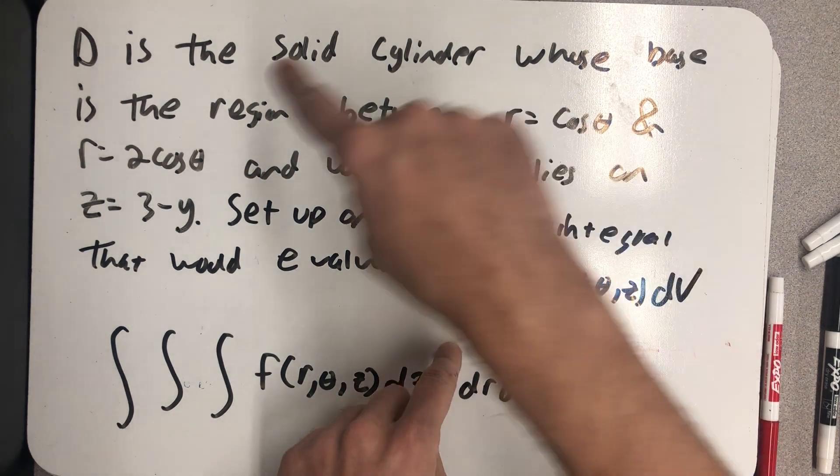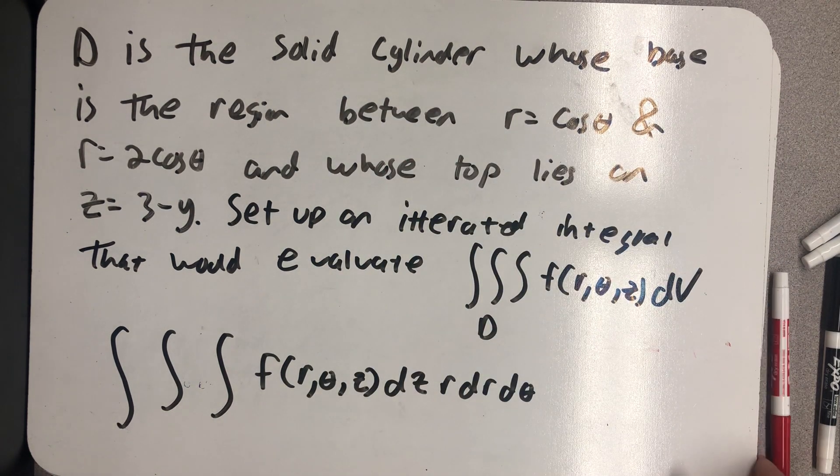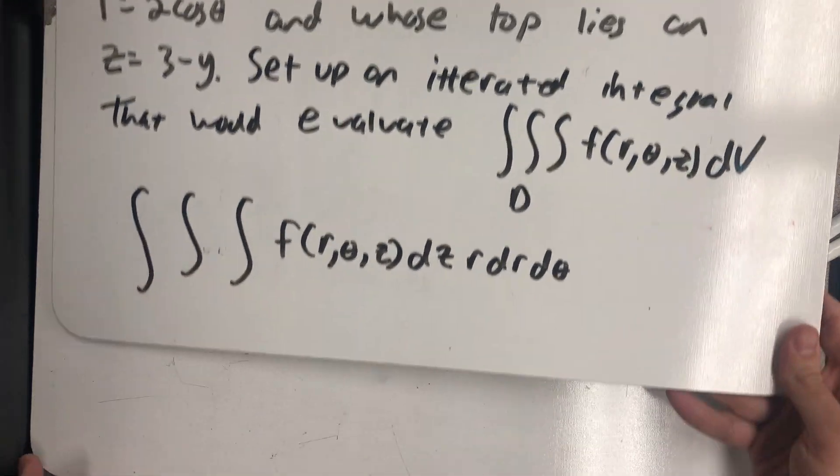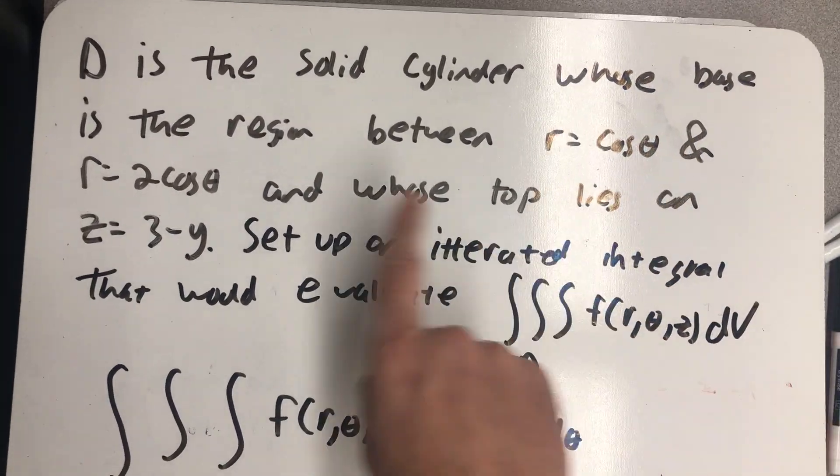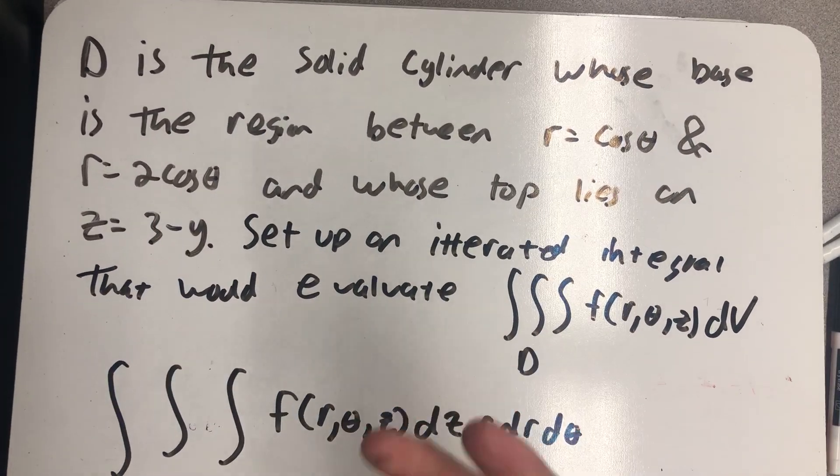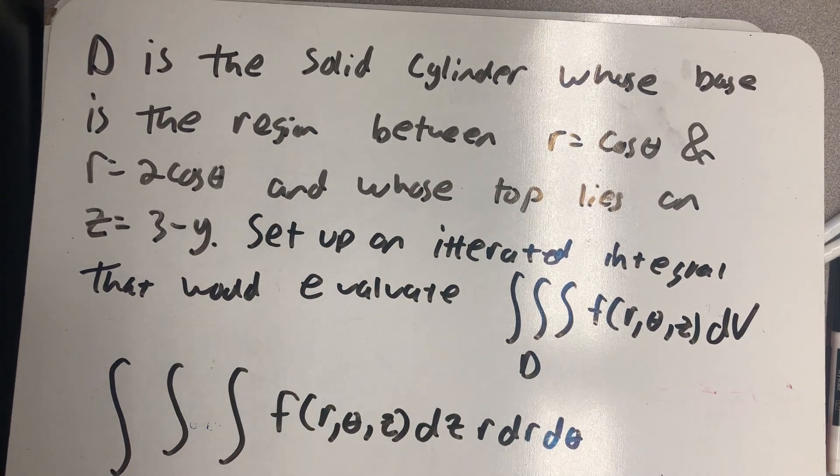Now we just need to understand this region D that's described here. I'm going to draw what it tells me lies in the polar plane first. That's really going to become the projection I work from, r equals cosine theta and r equals 2 cosine theta.